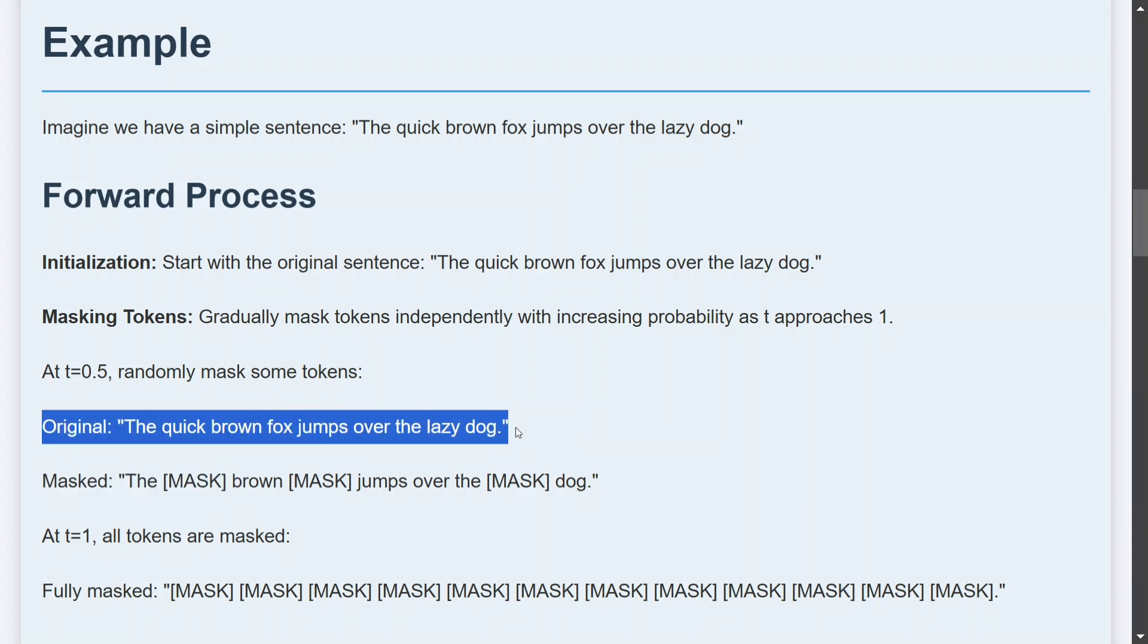Original was quick brown fox jumps over the lazy dog. Mask is the mask brown mask jump, so you have now started masking some words. So instead of adding noise, here we are using masking. That is the only difference.